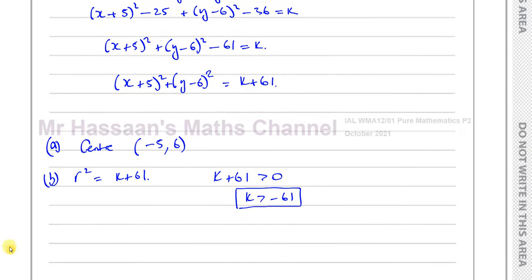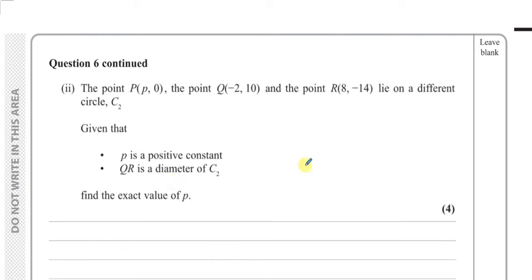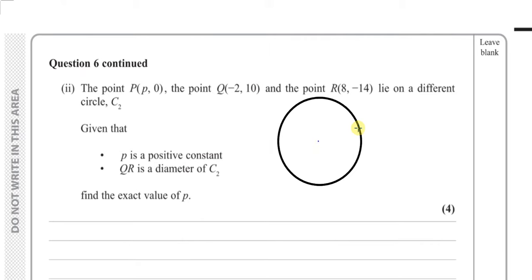Now for part 2. It says the point P (p, 0), the point Q (minus 2, 10), and the point R (8, minus 14) lie on a different circle C2. Given that p is a positive constant and QR is a diameter of the circle C2, find the exact value of p. A good idea is always to make a little sketch — taking a compass into the exam for this topic is always a good idea so you can draw a nice circle and picture what's going on.